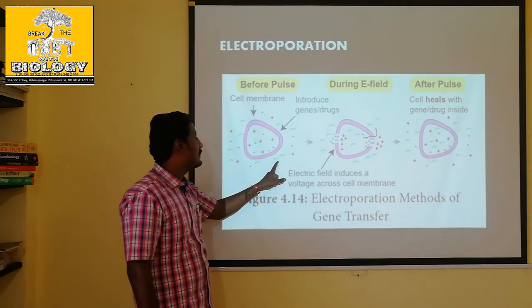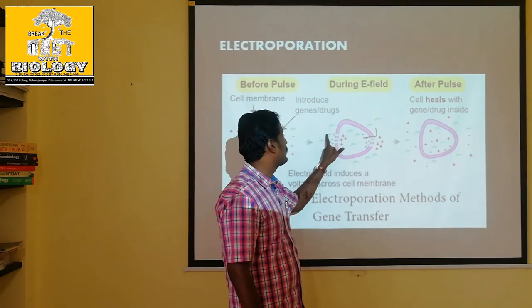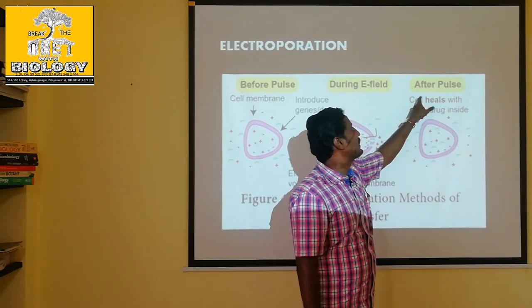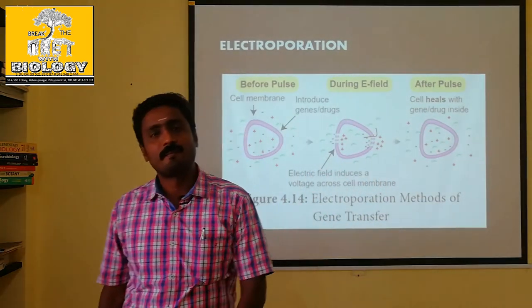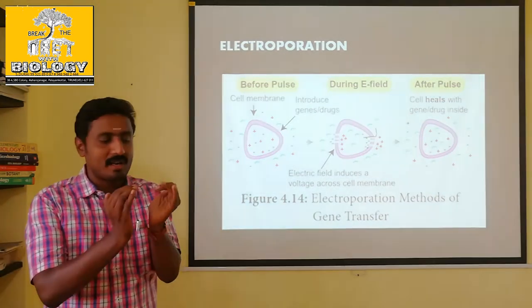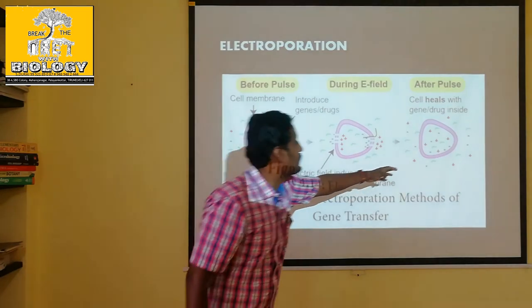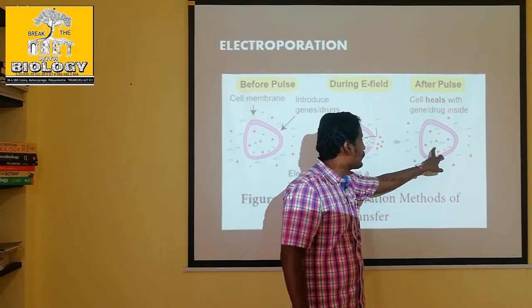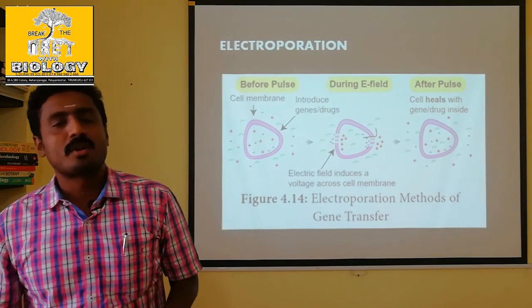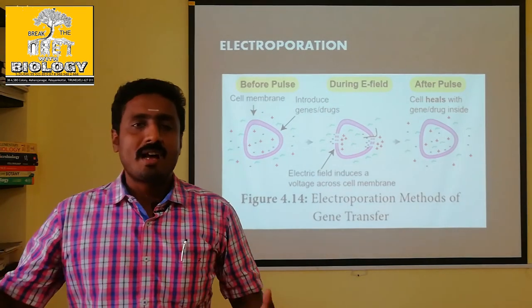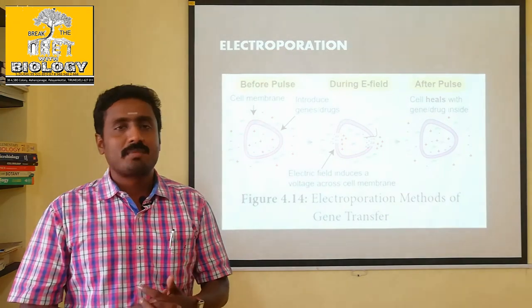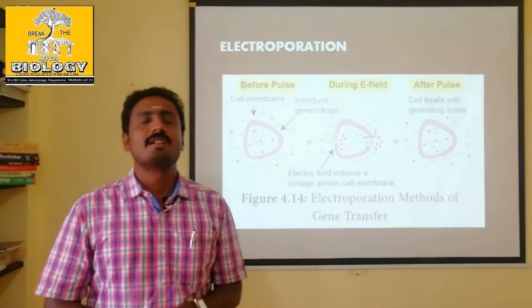This is the DNA. The DNA enters through the pores. We then close the electrical field. The cell will automatically heal the plasma membrane. If we look at the DNA, we will multiply using tissue culture. We will multiply the plant.